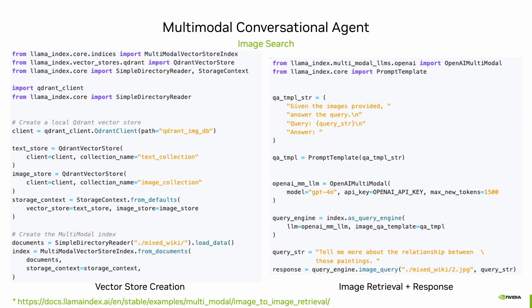Here is a code snippet from the LlamaIndex documentation. It's a very simple image search application that is easy to follow. On the left-hand side, you create a vector database using an image and text dataset. Once you have created that vector database, on the right-hand side, the snippet showcases how a user query along with a reference image can be passed to do a relevant image search in the vector database and generate a response based on the user's questions. Feel free to try it out — they have a link to fire up this example directly in Colab.